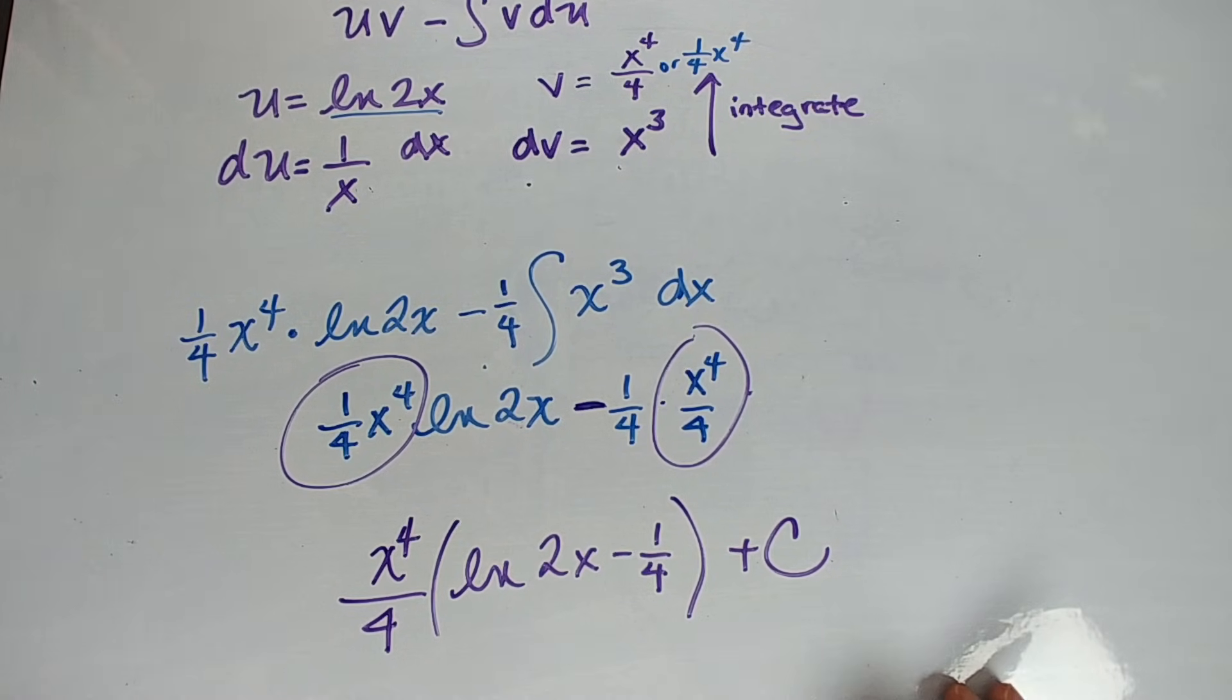You know when to use u substitution. You look at something and you see its derivative sitting there, use u substitution. Generally, if you can't use that, parts is a good idea. You want to say, hey, what's going to be u? What's going to be dv? u is the thing that would be way easier if they had given you the derivative because that's what you're going to use. I hope this helped.